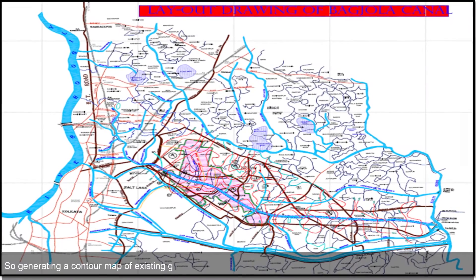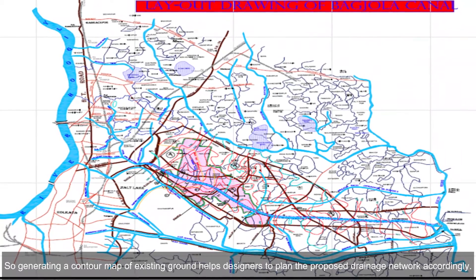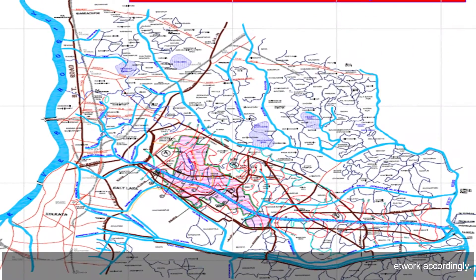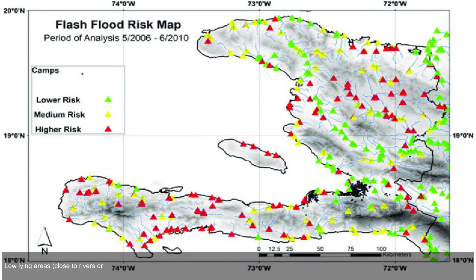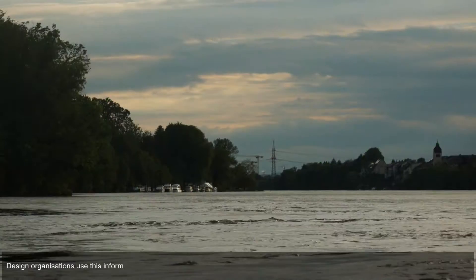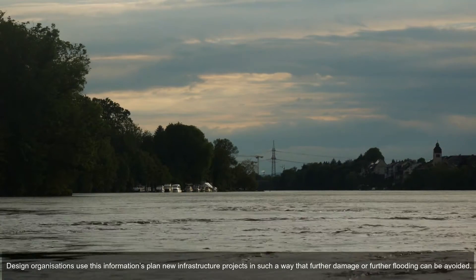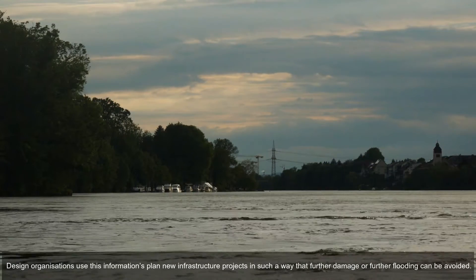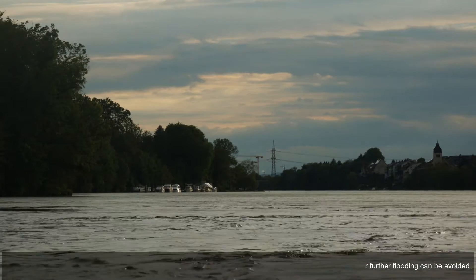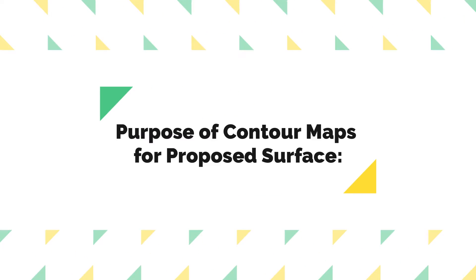Low-lying locations are commonly used for drainage outfalls connecting to existing rivers, ponds, or canals, so generating a contour map of existing ground helps designers to plan the proposed drainage network accordingly. Low-lying areas close to rivers or canals are prone to flooding. Meteorological departments use contour maps to inform the public about flood-prone locations, and design organizations use this information to plan new infrastructure to avoid further flooding.